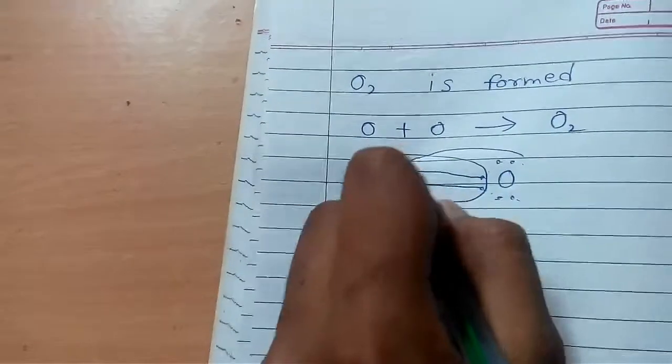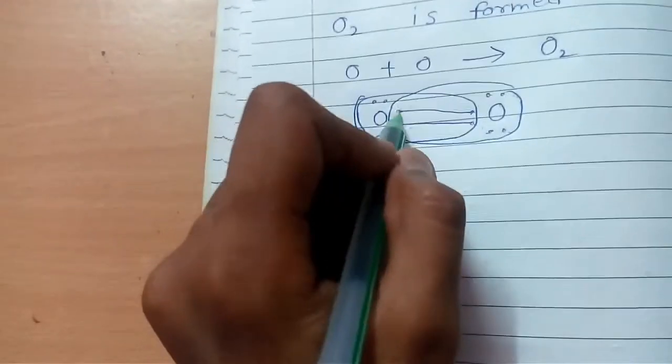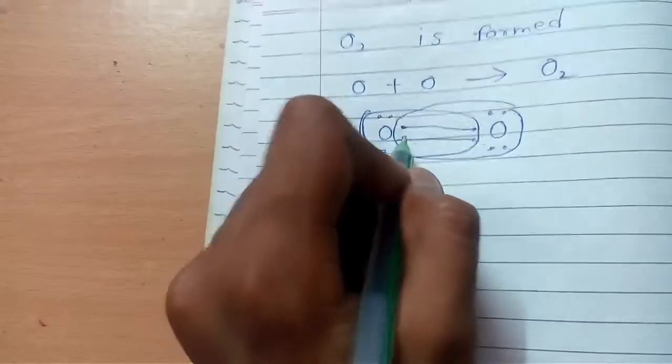This Oxygen has 8 electrons. So, the Oxygen molecule that is O2 is formed by the sharing of 2 electrons by one Oxygen and by another Oxygen atom.